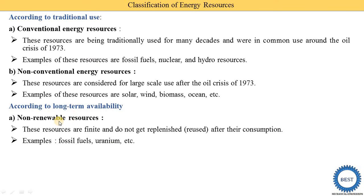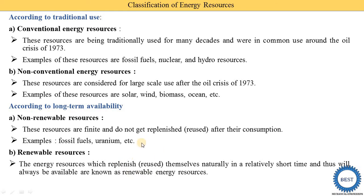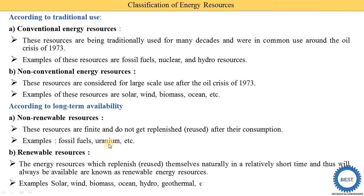Renewable resources are those we can use again and again. These are energy resources which renew themselves naturally in a relatively short time and will always be available — these are known as renewable energy resources. For example, solar energy is not available at night, but after a short time in the next morning we can again use it, that's why it is called a renewable resource. Examples of renewable resources are solar, wind, biomass, ocean, hydro, and geothermal.